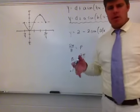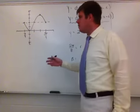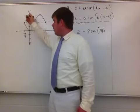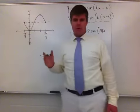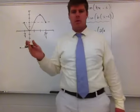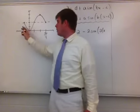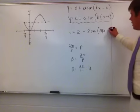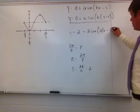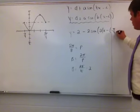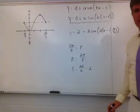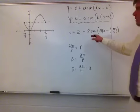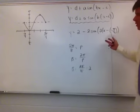C represents the horizontal shift. Looking at the function, it didn't start on the y-axis, so there is a horizontal shift. The horizontal shift in this case is negative π/4. Plugging into the formula, it becomes x minus negative π/4, and then I can fill in the complete equation.